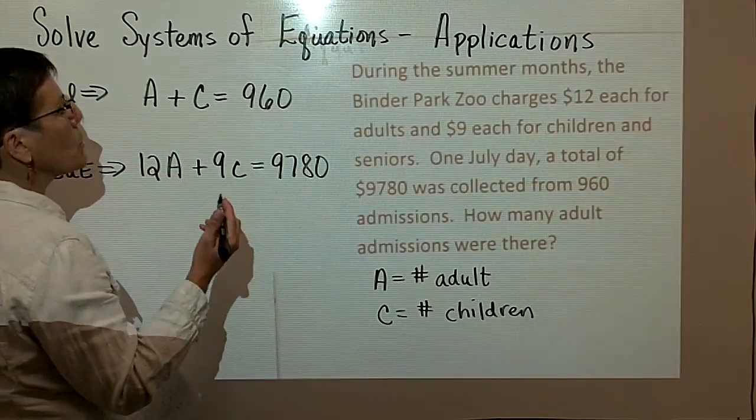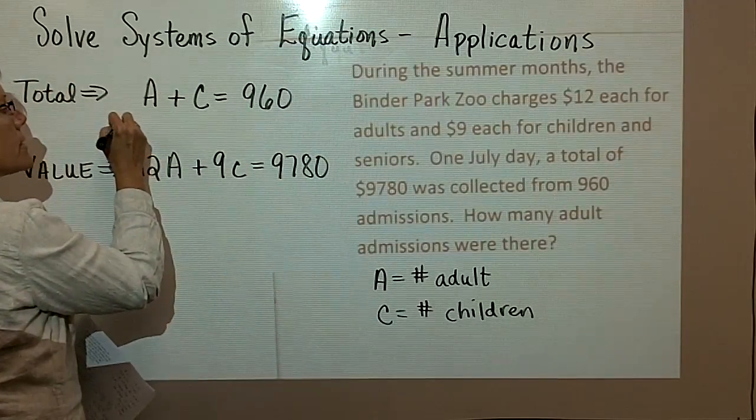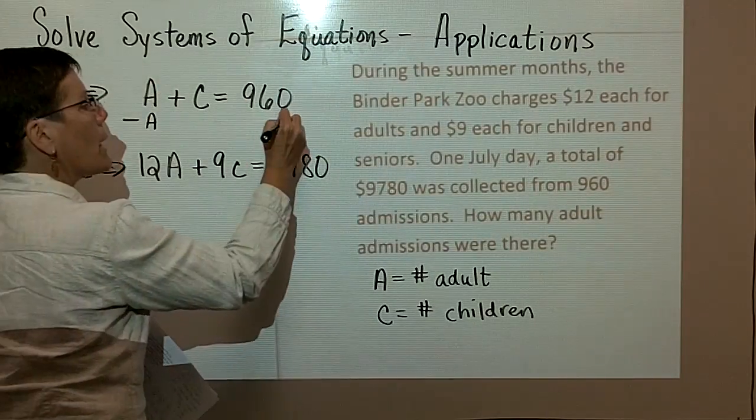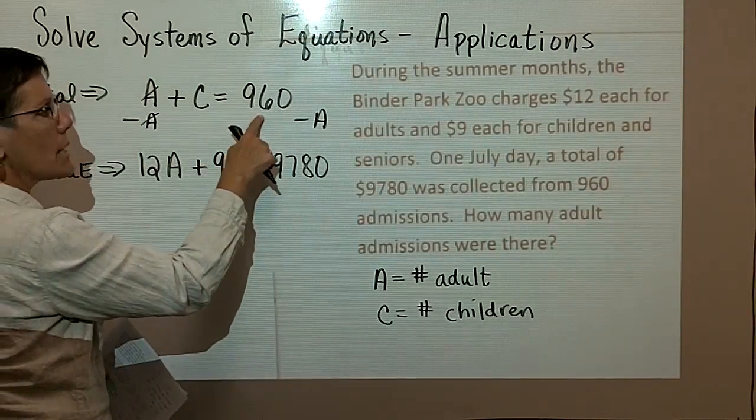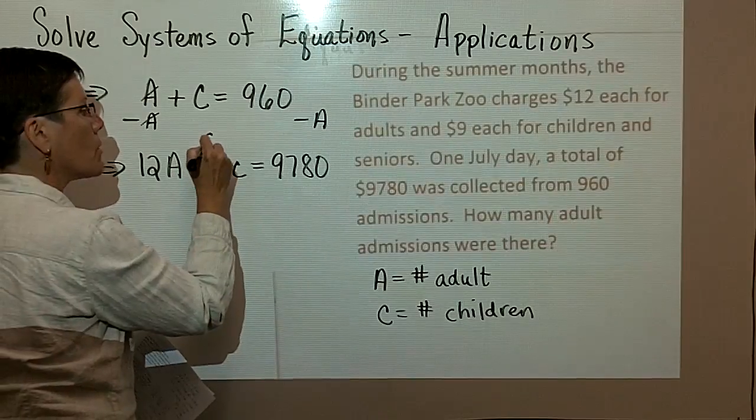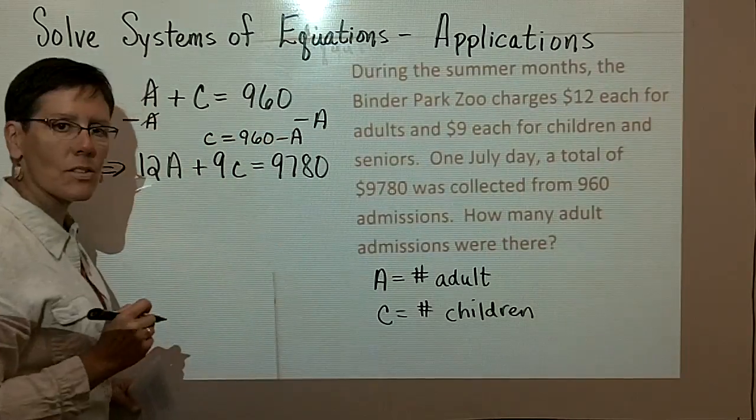In this particular case, I think what I'm going to do is take this equation and isolate the letter C by subtracting A from both sides. That will give you C equals 960 minus A.